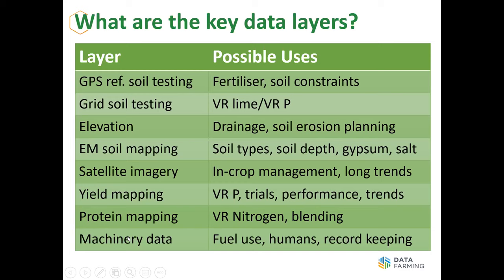The last data layer is machinery data. With all machines now connected, we can do record keeping, including fuel use maps to understand how machines are behaving in the field. But importantly, it also monitors what the humans have been doing. Often we see things in yield maps that are explained by what humans did at planting time — for example, the operator upped the speed of the planting rig by a couple of gears at midnight because they were bored, and you can see the impact in the yield maps. We totally underestimate how much impact our timing and our operators have.